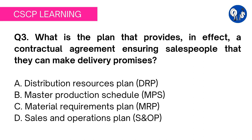Question 3: what is the plan that provides, in effect, a contractual agreement ensuring salespeople that they can make delivery promises? Option A: distribution resources plan (DRP). Option B: master production schedule (MPS). Option C: material requirements planning (MRP). Option D: sales and operations plan (S&OP). Let's start with option A, distribution resource plan.